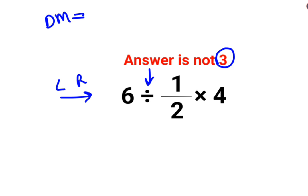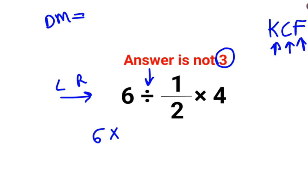So first we will do 6 divided by half. Whenever you have a fraction involved in division, we will follow the rule of KCF — where K stands for keeping the first number as it is, C stands for changing the division sign to multiplication, and F stands for flipping, or taking the reciprocal of the second number, which is 1/2. The reciprocal of 1/2 is just 2, multiplied by 4. So the answer for this question is supposed to be 48.